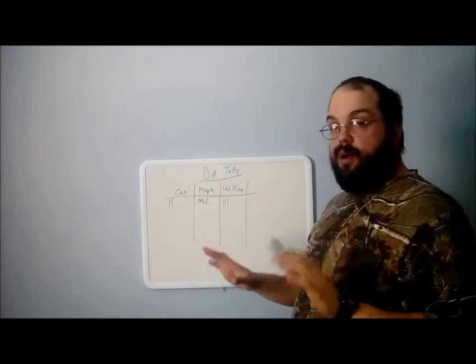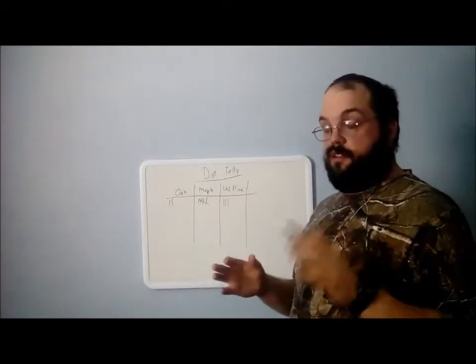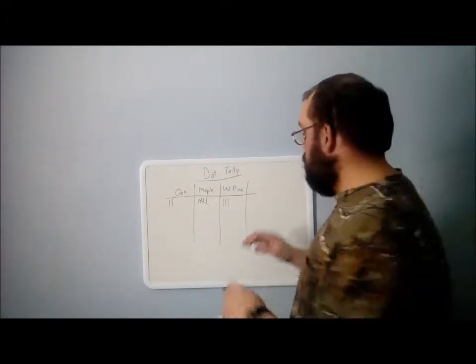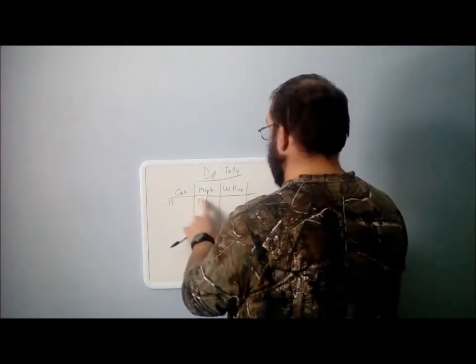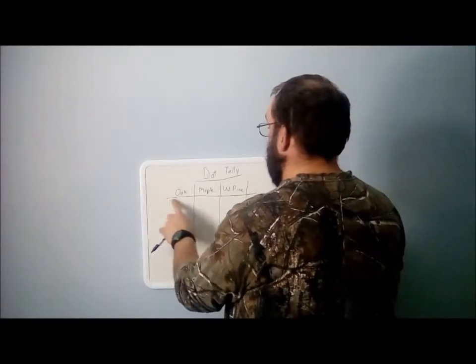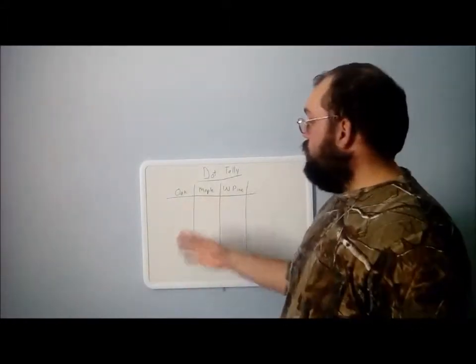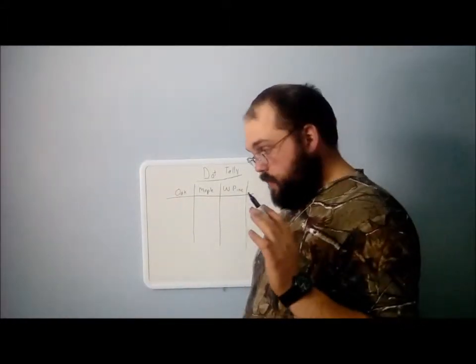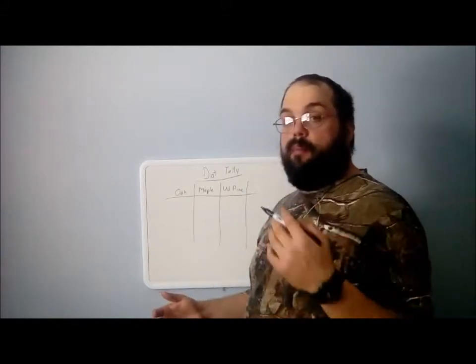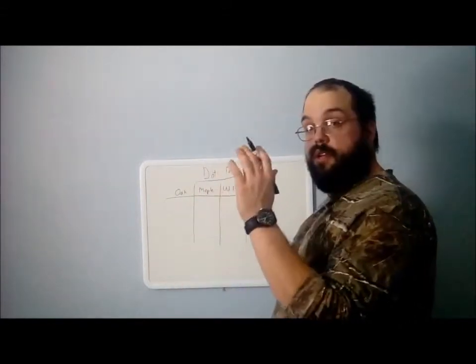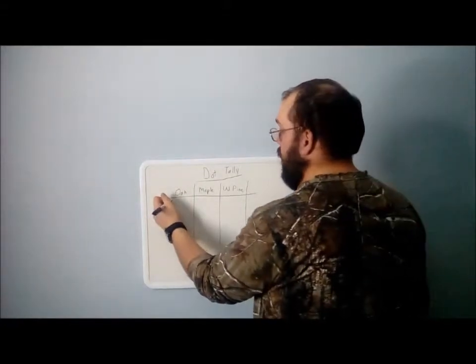So I'm going to show you an easier way that uses less space and is a lot more efficient, especially when it comes time to total up everything. Let's get rid of these. So let's say you get to your oak tree and you want to start counting how many oak trees you have. First thing, you get to your first oak, make one dot.